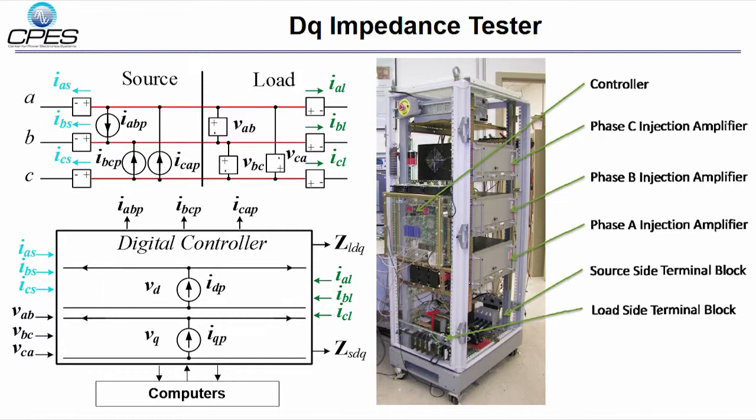ABC frame perturbation signals are amplified by the power amplifiers and then applied to the system to be tested. Voltage and current response from the system are collected and transferred to DQ frame by the digital controller. Impedances are calculated by the computer using response signals and perturbation signals.